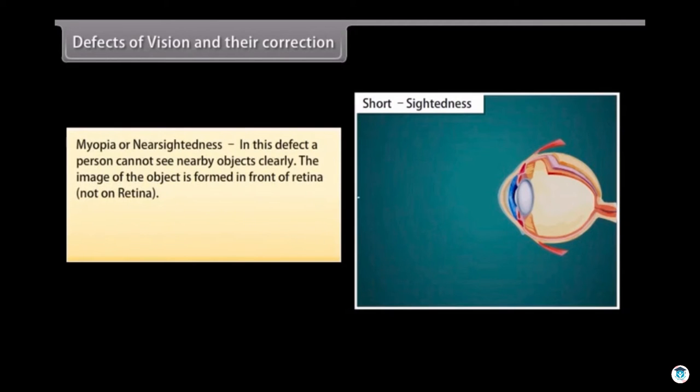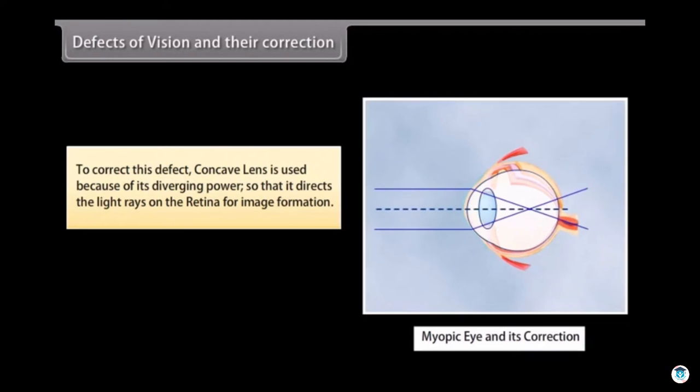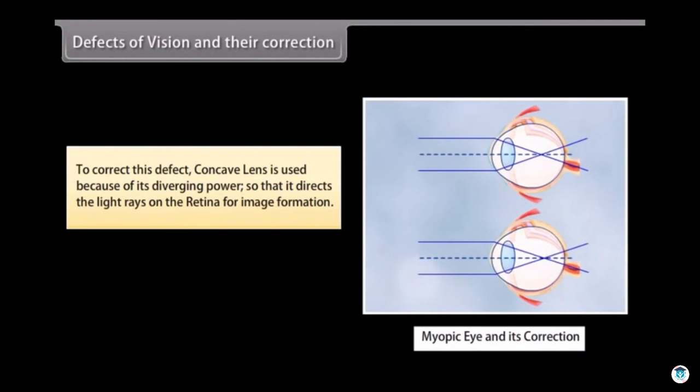Myopia or near sightedness: In this defect a person cannot see nearby objects clearly. The image of the object is formed in front of retina. It is caused either due to elongation of eyeball or due to excessive curvature of eye lens. To correct this defect, concave lens is used because of its diverging power so that it directs the light rays on the retina for image formation.